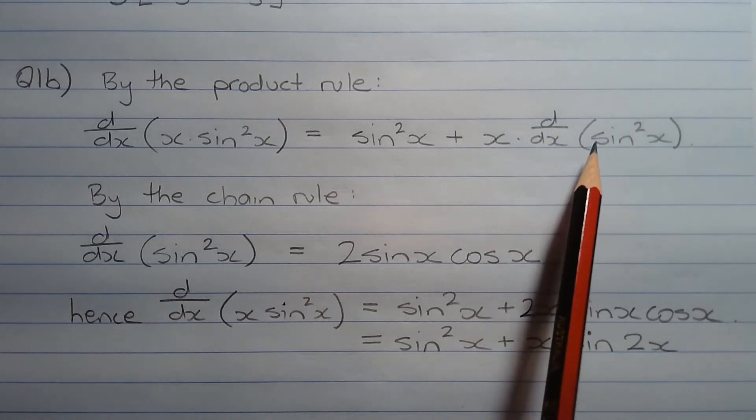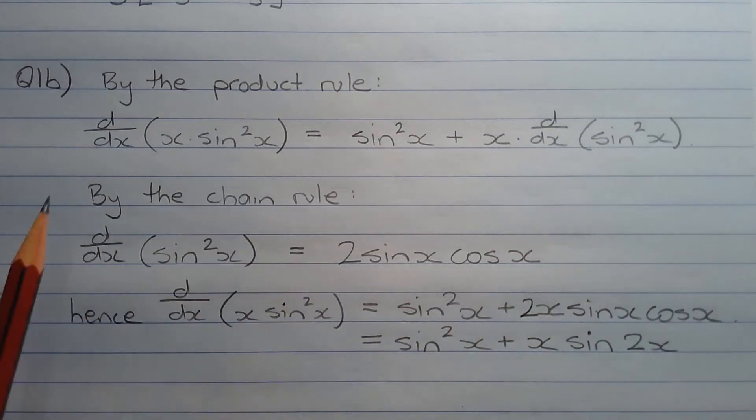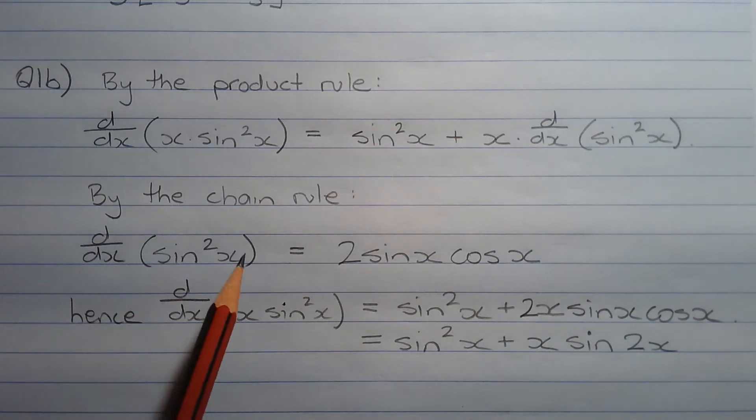Now to differentiate sine squared x, we need to apply the chain rule because it's a composite function, a function of a function. So we have sine x all squared, if we were to write this a different way.